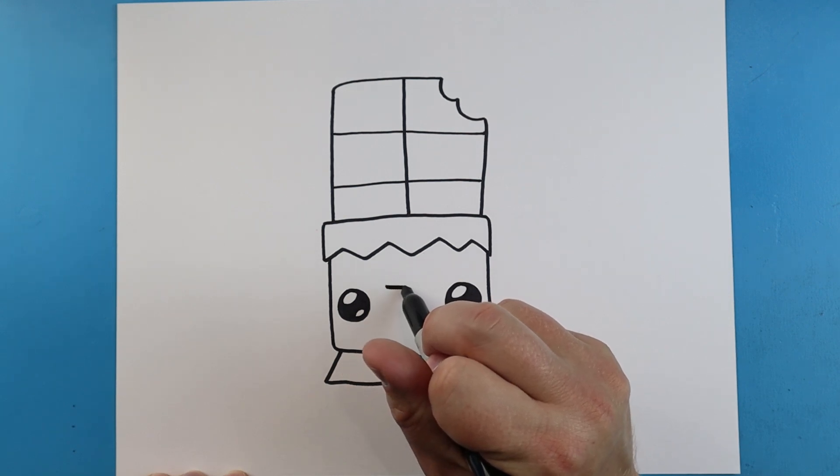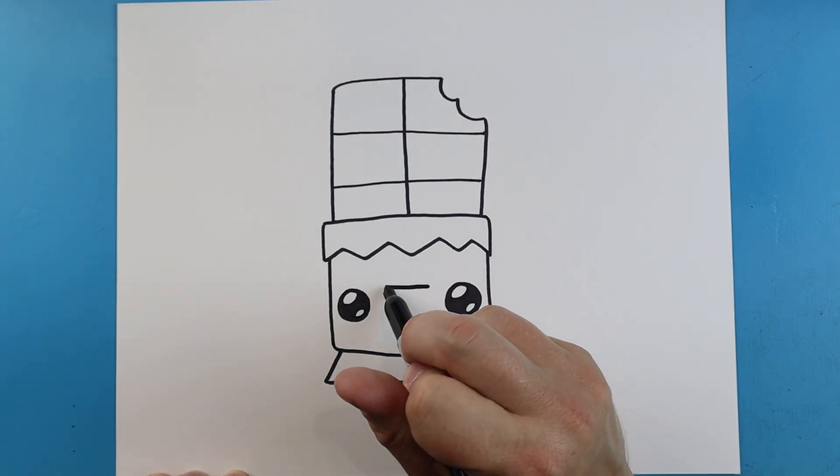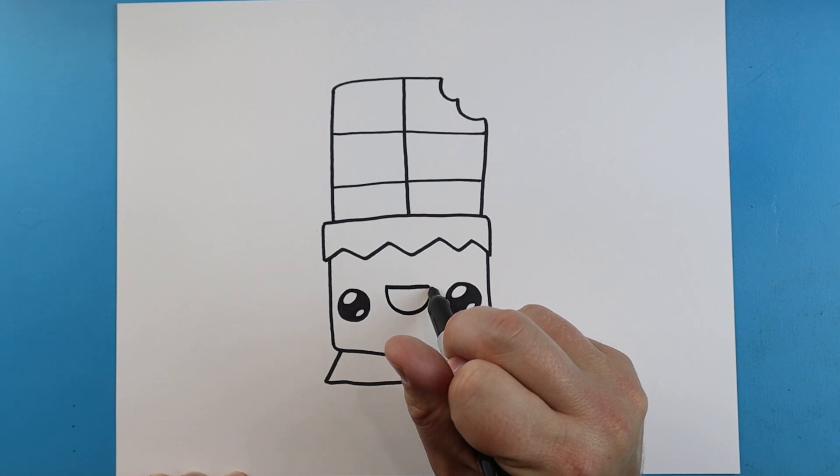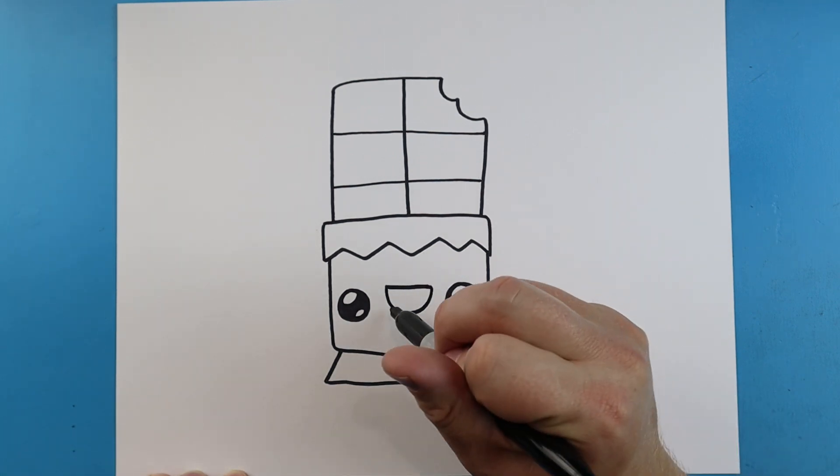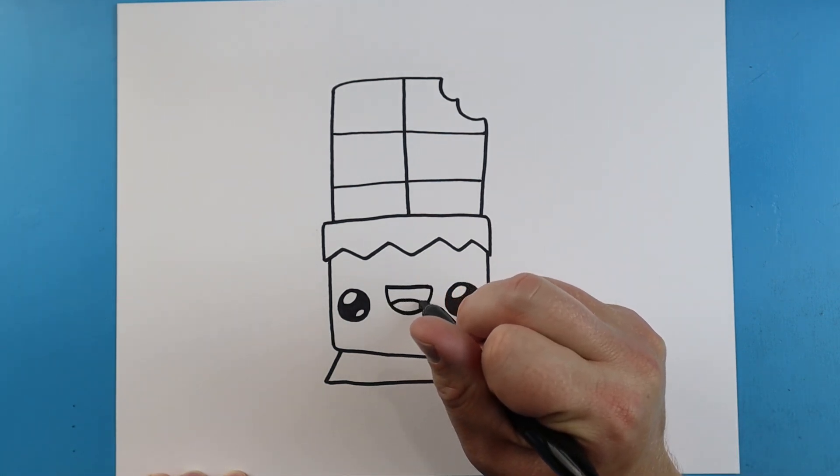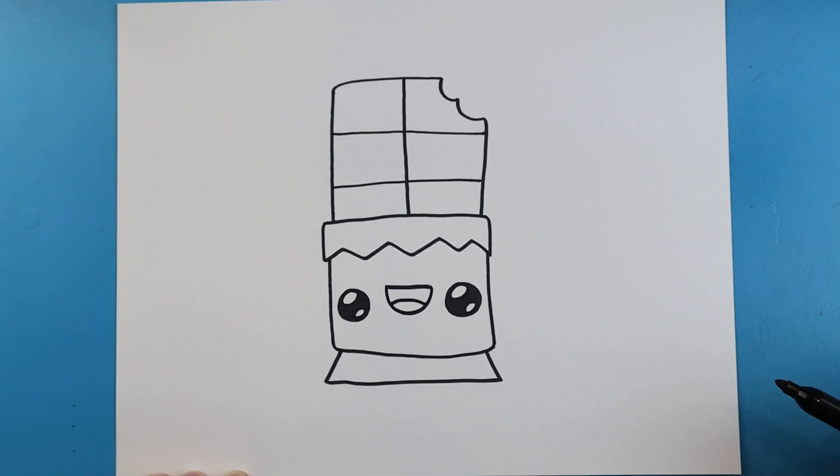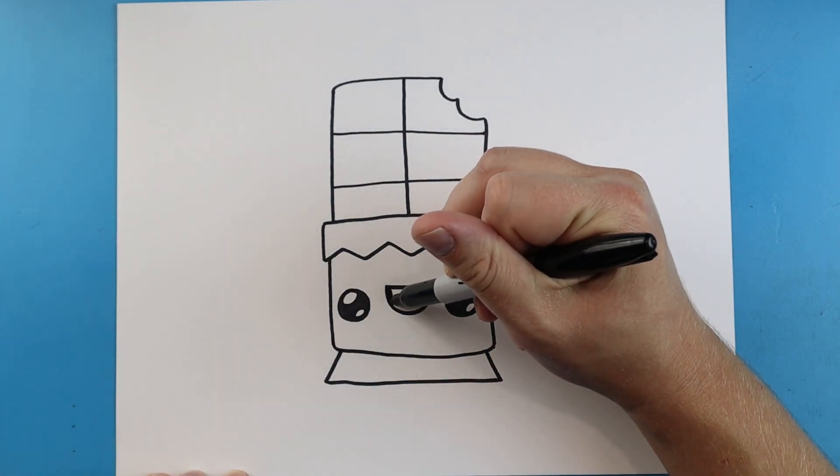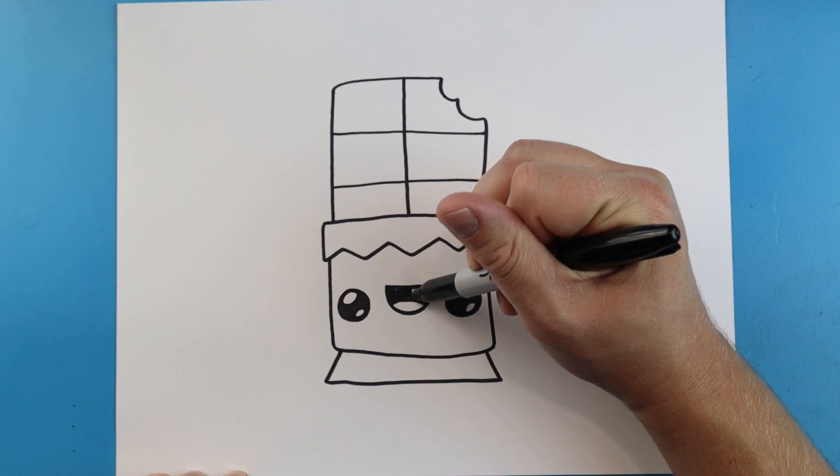Starting here I'm going to draw a line across with a nice smiley face for the mouth. Then we'll make a little line that comes across for the tongue. And I'm just going to color this part in really quickly.